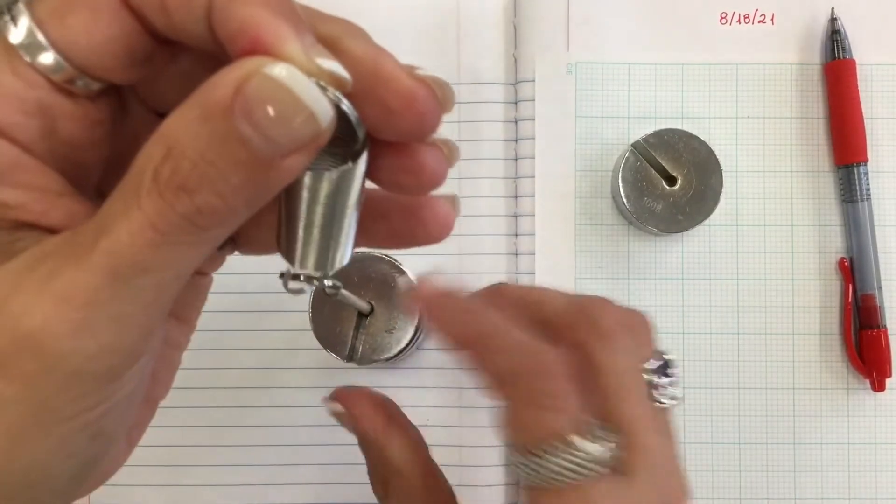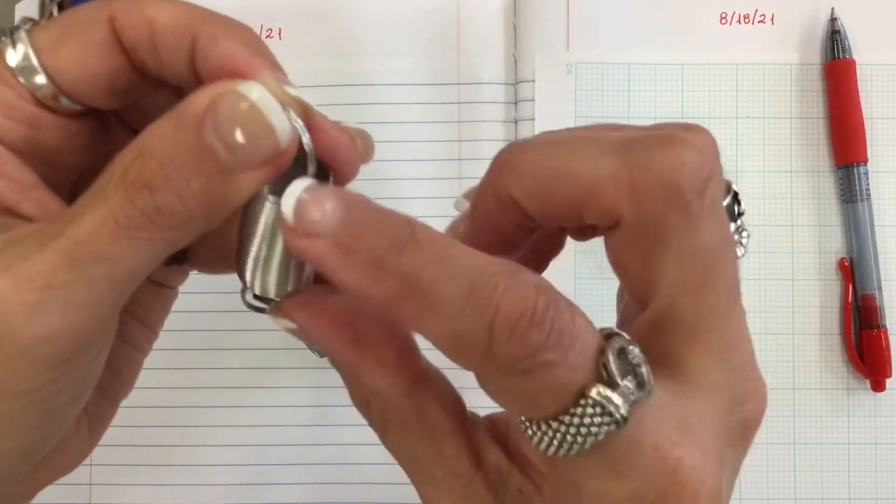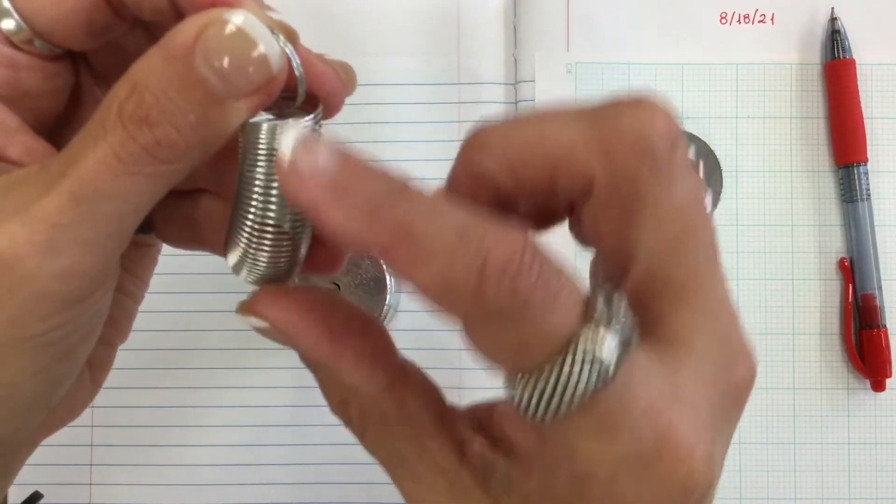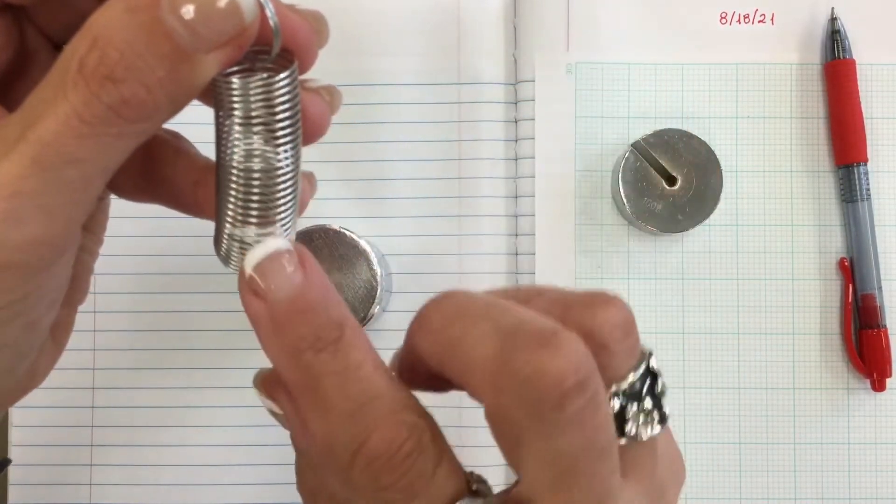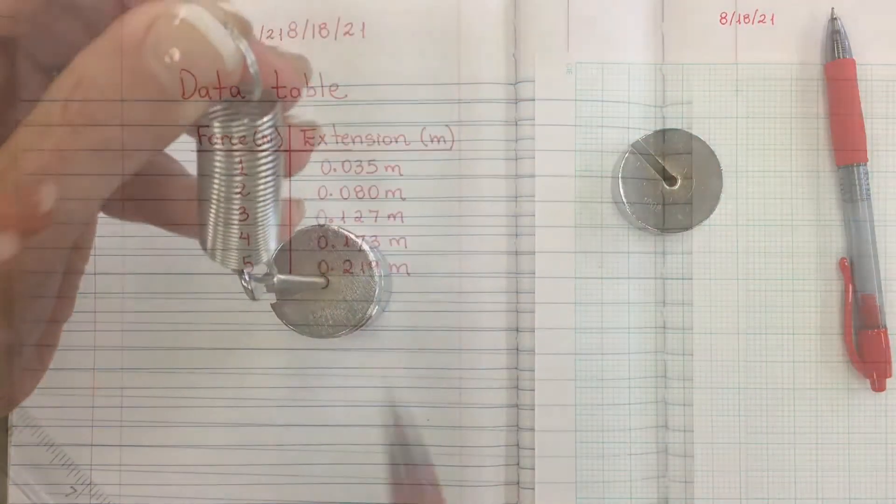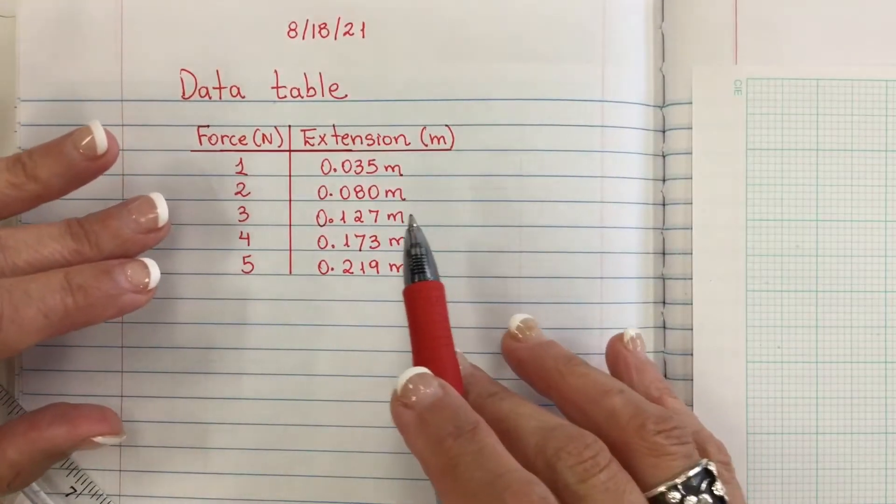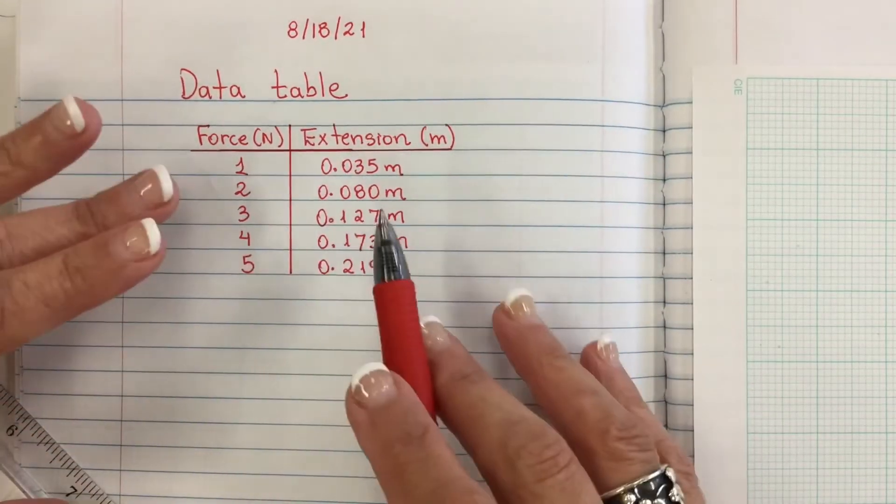So every time that I add one mass I record a measure with a ruler, how much the spring is being extended. This is the data table from this lab experiment.